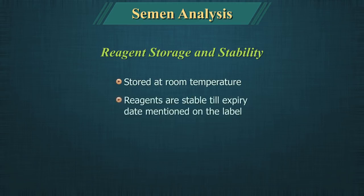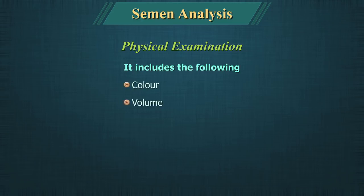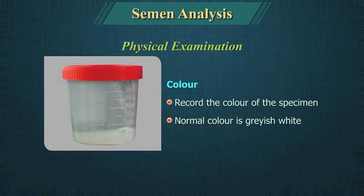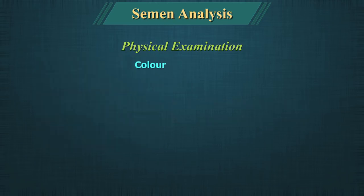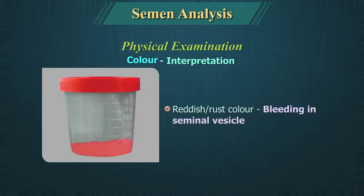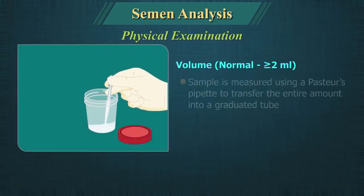Physical examination of semen includes color, volume, liquefaction time, and viscosity. Color: Record the color of the specimen. Normal color is grayish white. A yellowish color may indicate pyospermia, and reddish or rust color may indicate bleeding in the seminal vesicle.